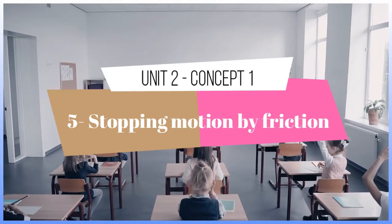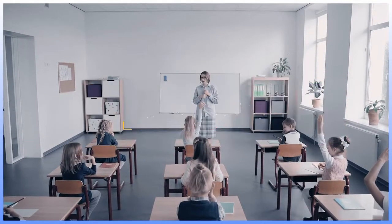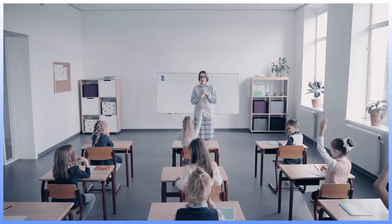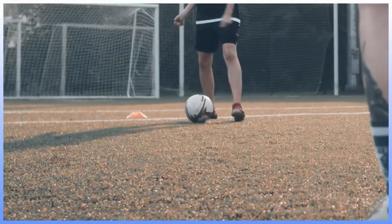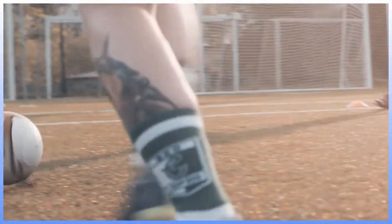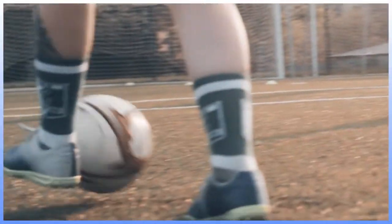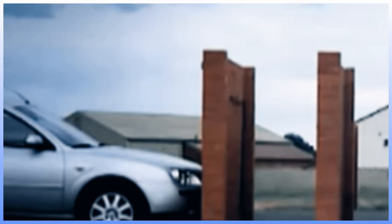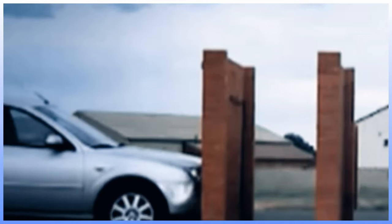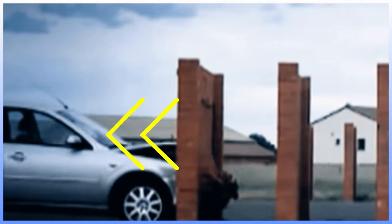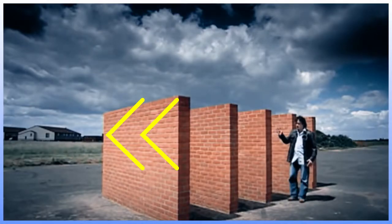Stopping Motion by Friction. Sometimes it is easy to observe where the force that stops an object comes from. If a car crashes into a wall, it may stop suddenly. The wall applied a force to the car in the opposite direction from which it is moving.